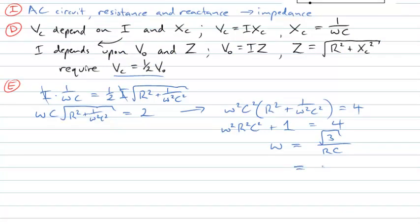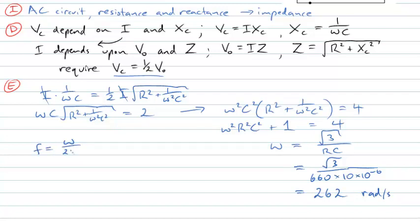Putting in the values — root 3 divided by the resistor of 660 ohms times the capacitor of 10 microfarads — I get an angular frequency of 262 radians per second. The question asked for frequency, so I shouldn't stop at angular frequency. Frequency equals angular frequency divided by 2π. So 262 divided by 2π gives, to two significant figures, 42 hertz. At a frequency of 42 hertz in this circuit, the peak voltage across the capacitor will equal half the applied voltage.